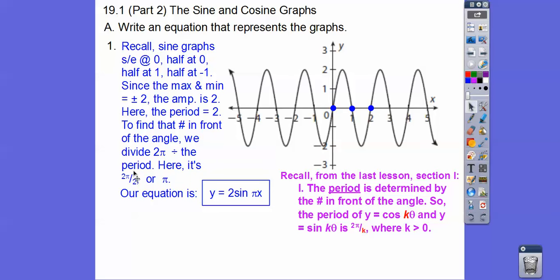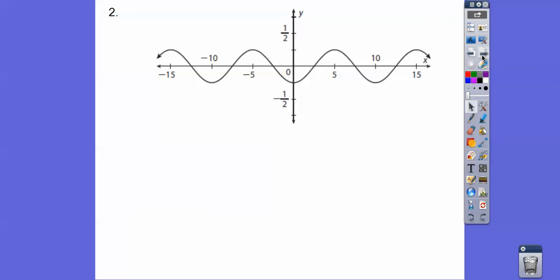Two pi divided by the period, which is two in this case, because the period starts and ends at zero, halfway at zero, halfway at one, halfway at negative one. There's one sine period right there in two. We take that two and we divide it, the length of the period, divide that into two pi.